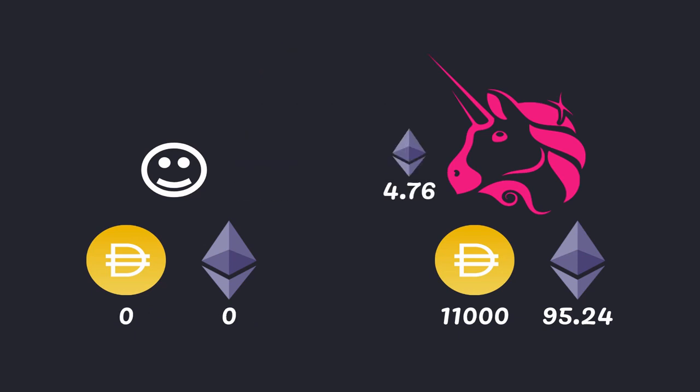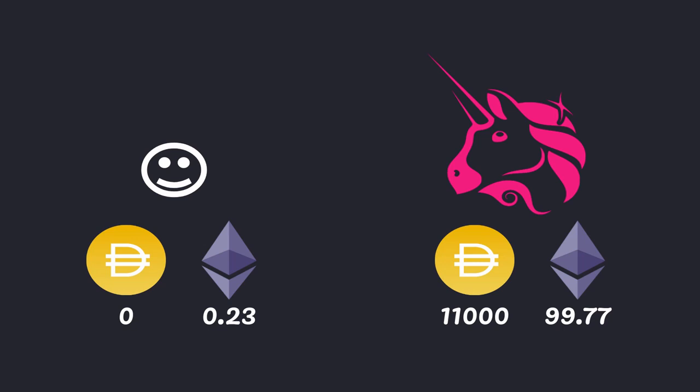Uniswap accepted all of my DAI but it didn't take in all of my ETH and it returned some of it back to me. So by swapping half of my DAI for ETH and then providing both of them as liquidity, I am left with some tokens that are unutilized — in this case ETH.